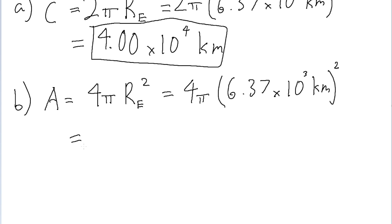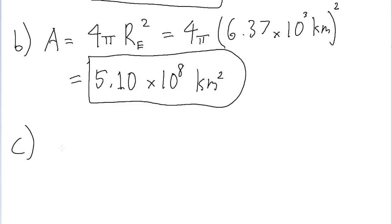If we put this into a calculator, then we find that the surface area is about 5.10 times 10 to the power of 8 squared kilometers. And that is the surface area, so that is the answer for part B.